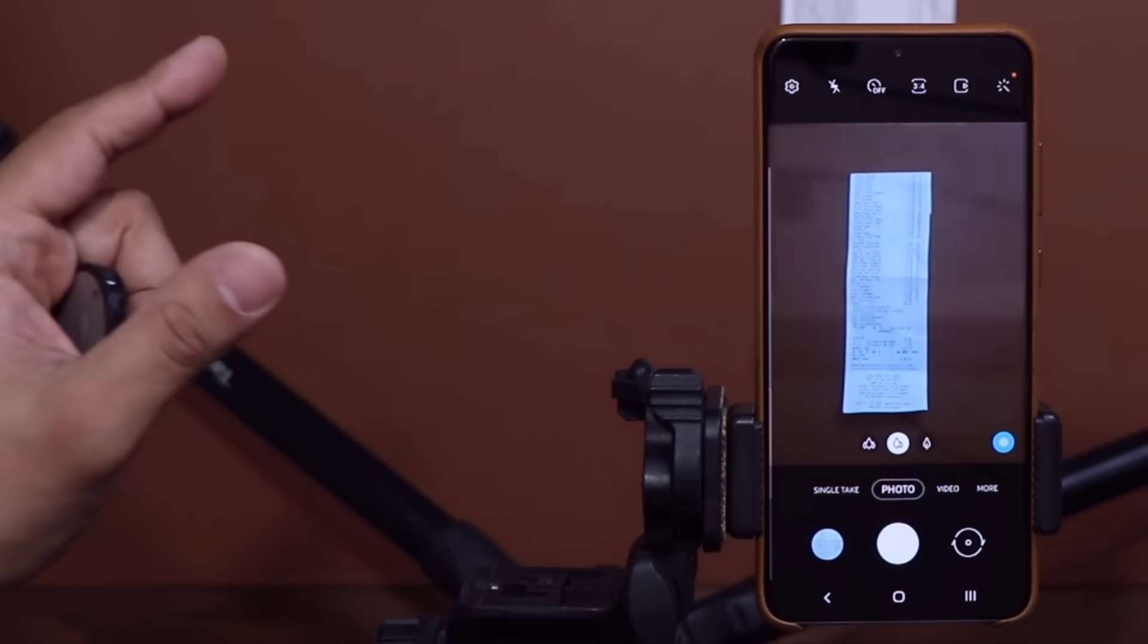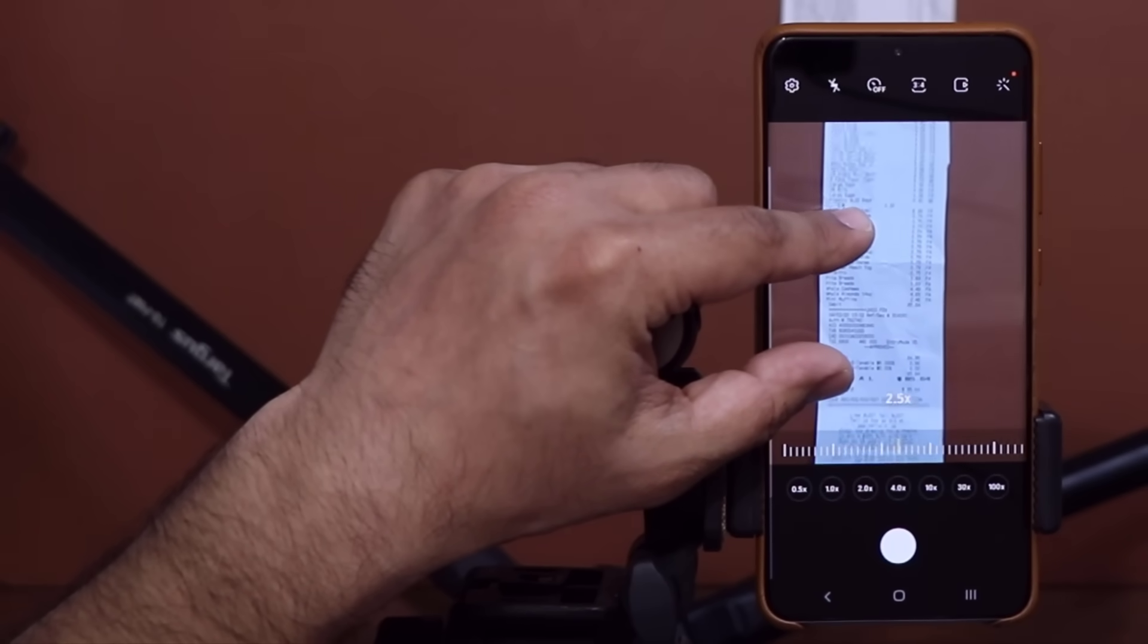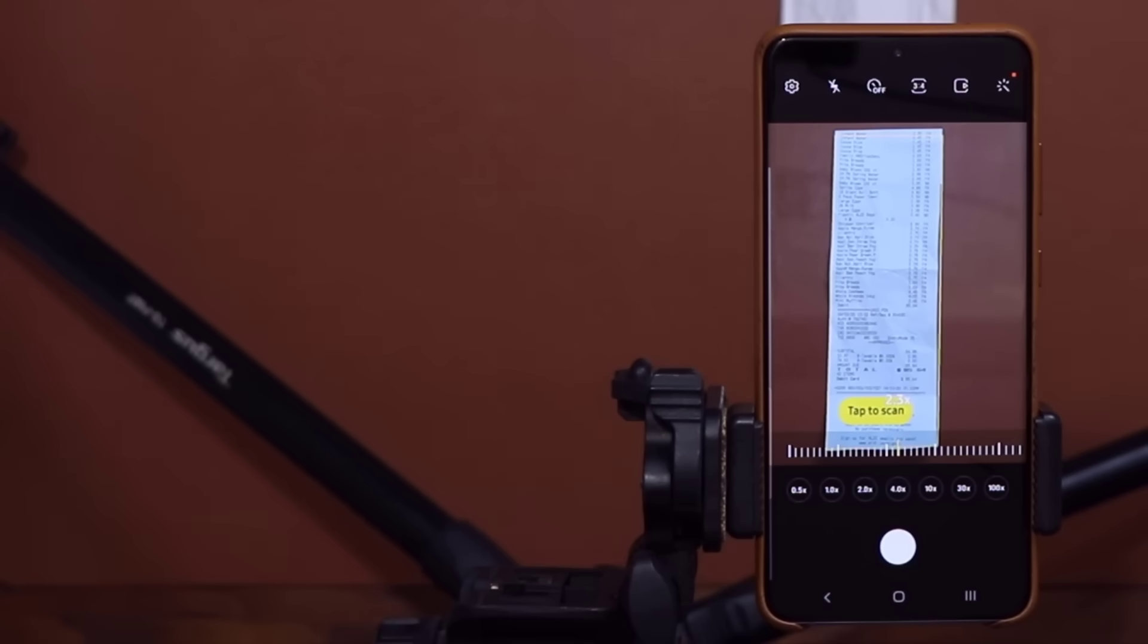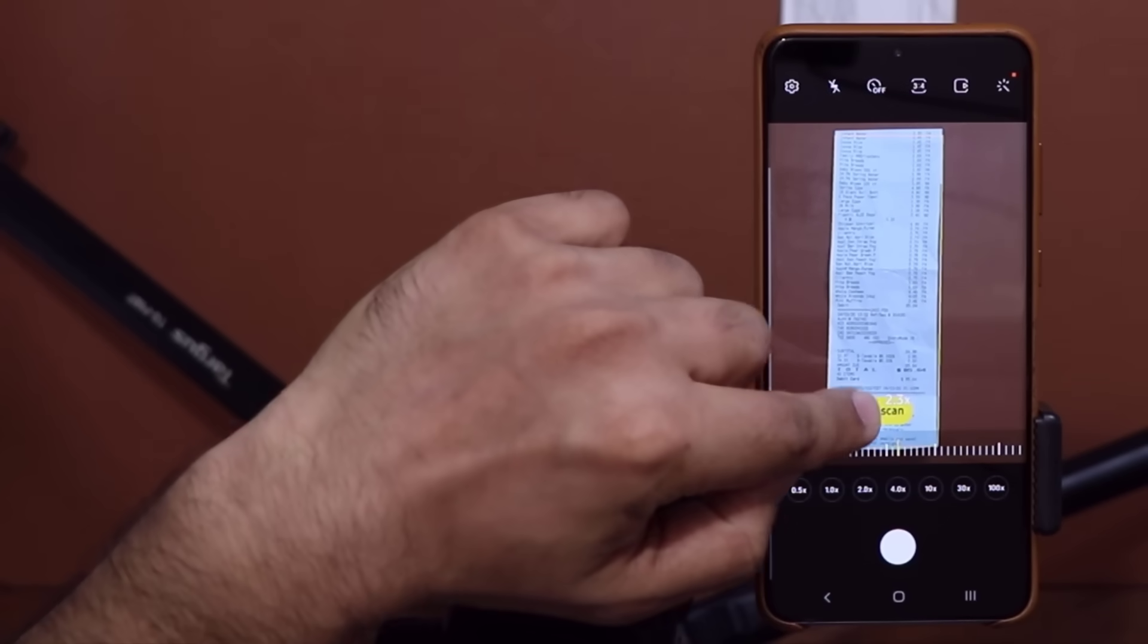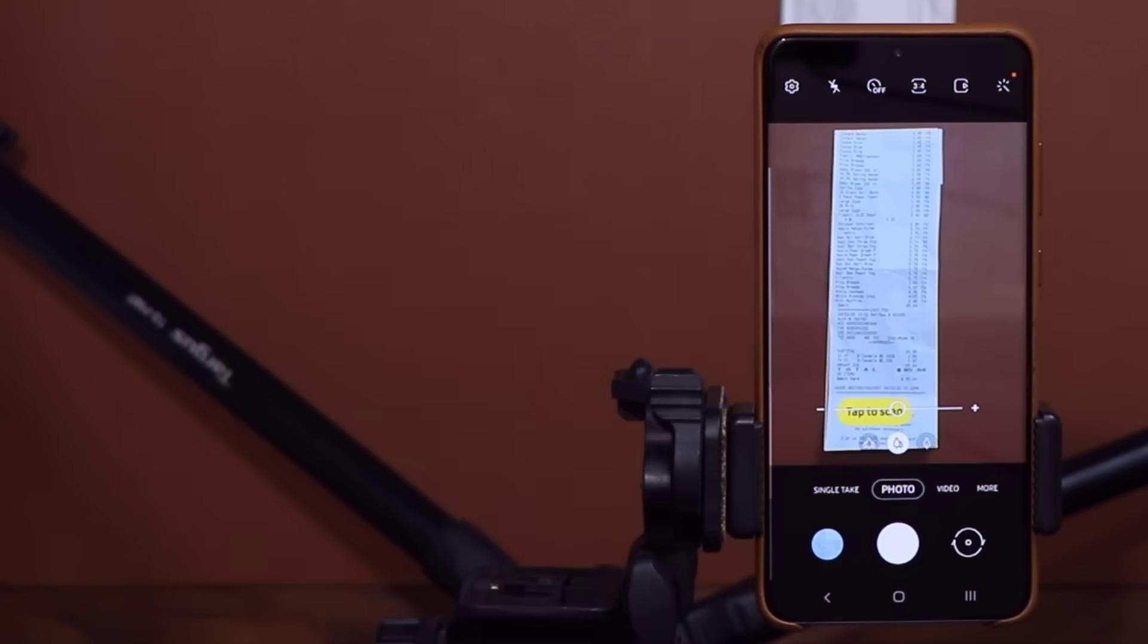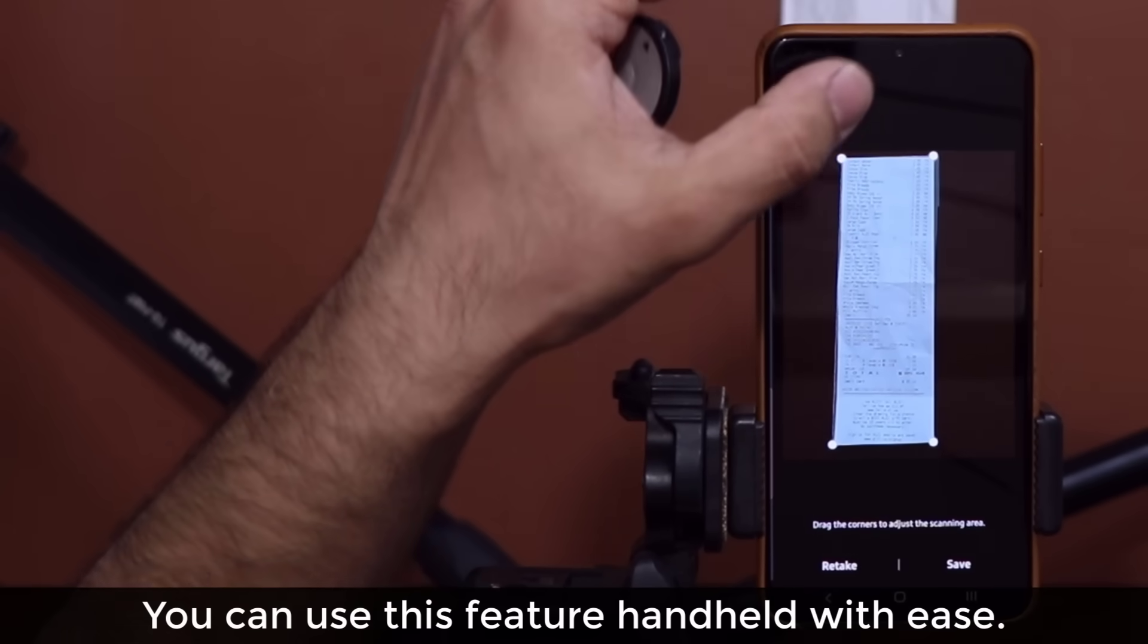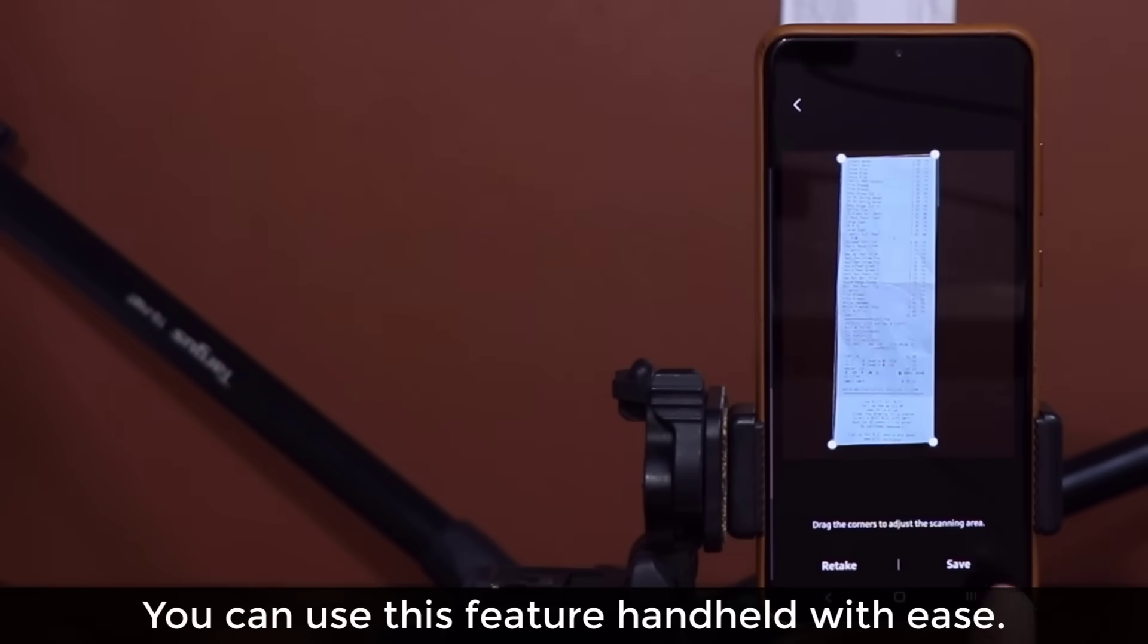I'll let you know one thing. If you want you can zoom in on a subject to get a clearer image and it's still going to recognize that image and then you can tap to scan. Tap to scan and then fine tune the scanning area just like that and then save it like that.